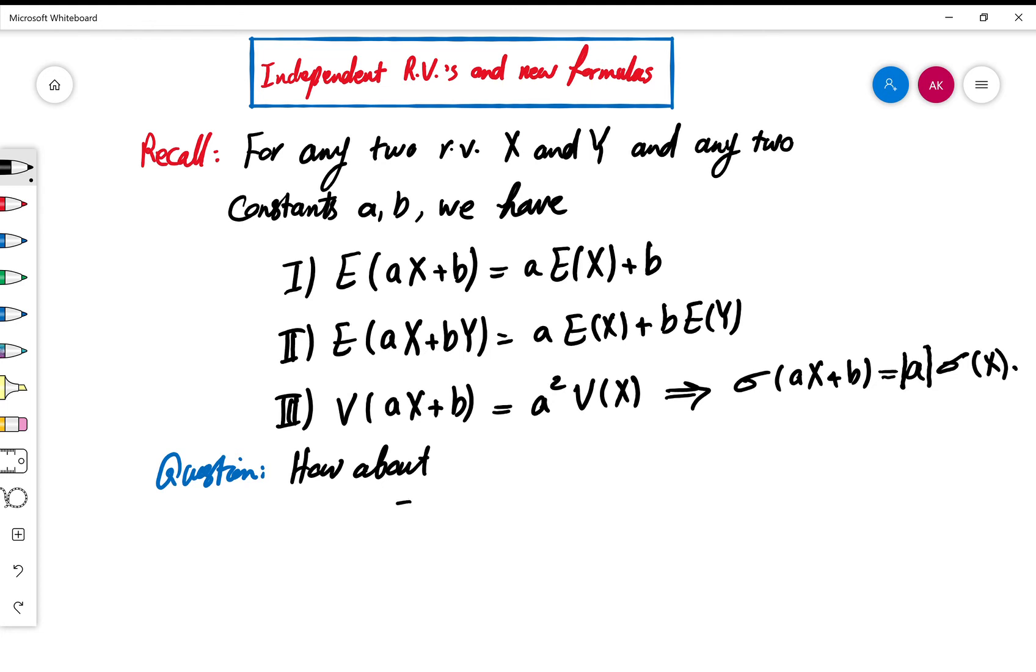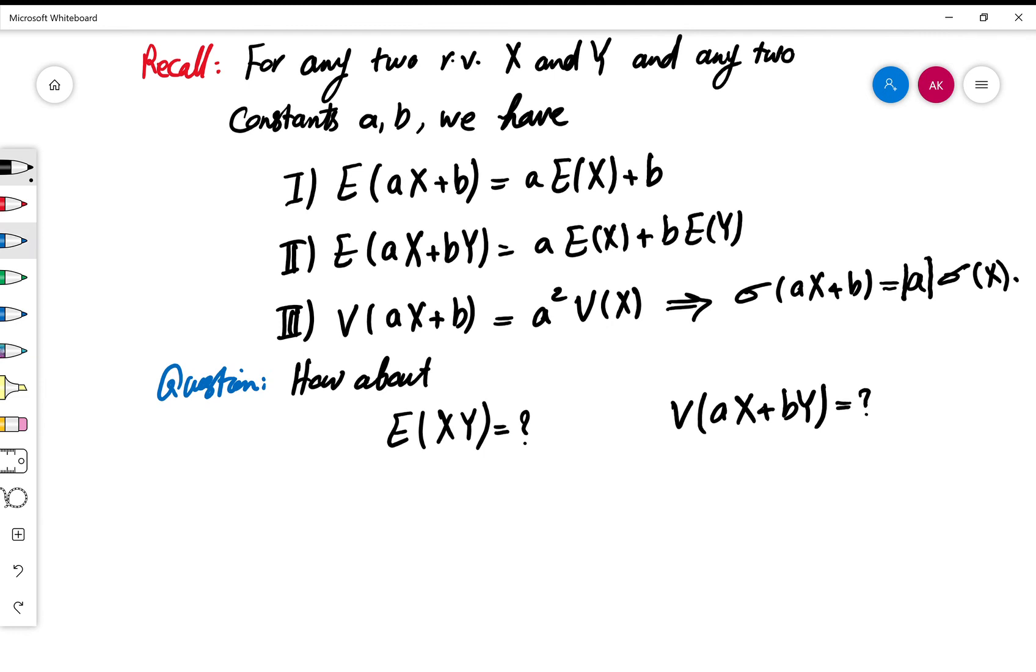Well then the question comes up: how about these guys? How about E(XY), for example? Do we have any formula for this, because that's another way of defining a new random variable. How about variance of aX+bY? We have expected value of aX+bY, do we have any formula for variance of aX+bY?